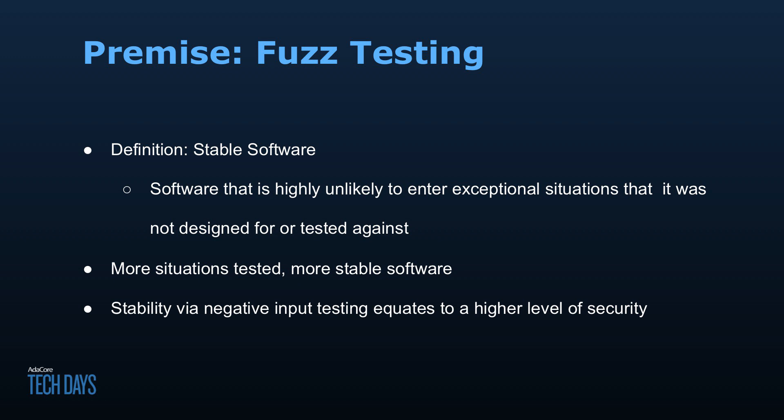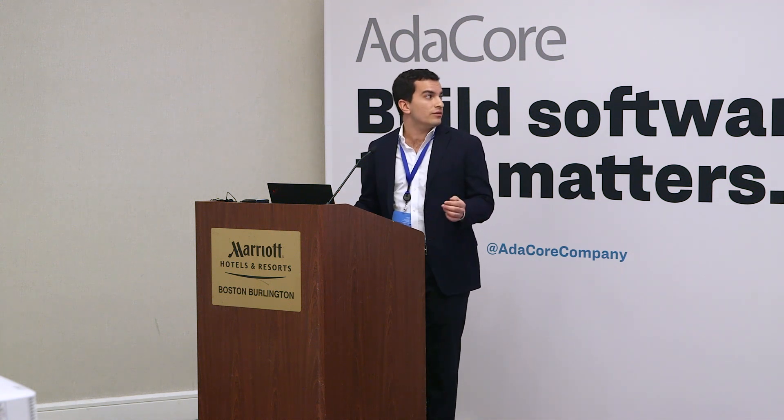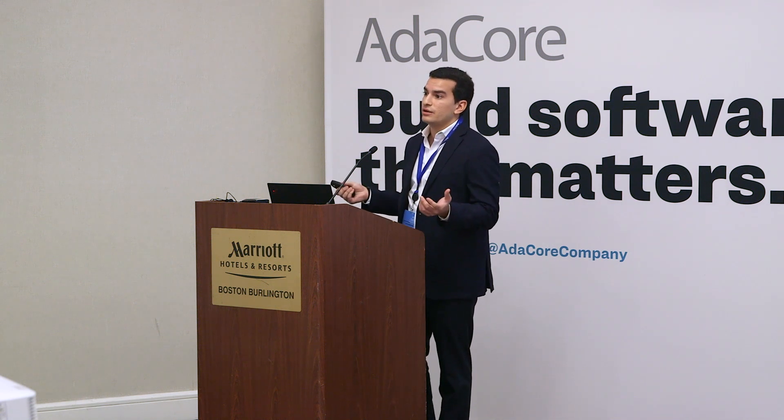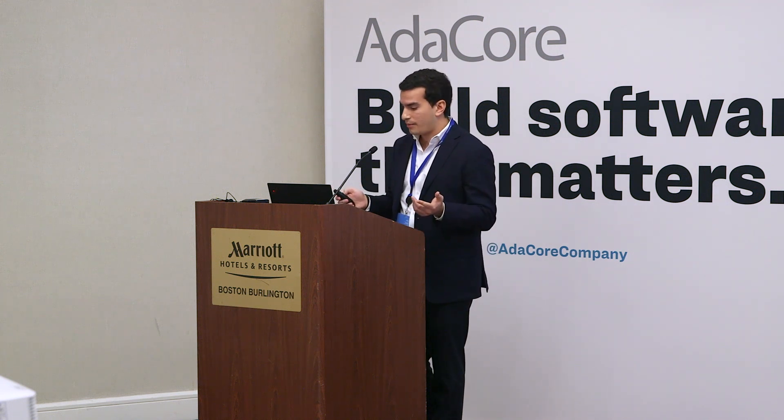Fuzzing is what's known as a negative input test — it feeds inputs that are designed to fail into your program repeatedly and looks for crashes. This makes your software more stable but also has potential security benefits, because more stable software is also more secure. For example, if you have a system that relies on external data from a satellite, any bug that can make your software crash is also something that somebody can exploit.